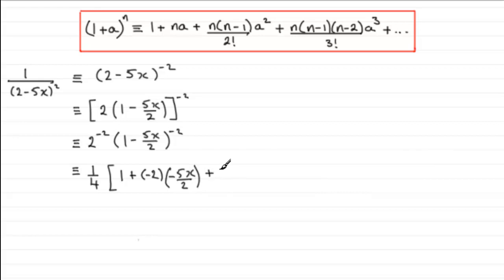Now we go on to the next term, so it's going to be plus n which is minus 2 times n minus 1, so we take 1 away from that minus 2 and get minus 3, divided by 2 factorial which is 2 times 1, and multiply it by a squared, so multiply it by minus 5x over 2 all squared.